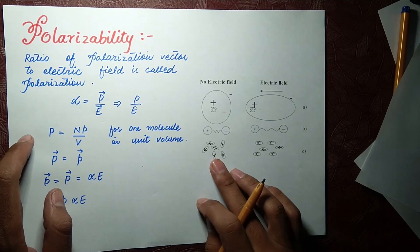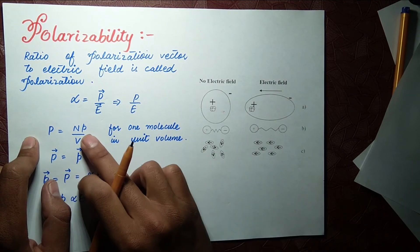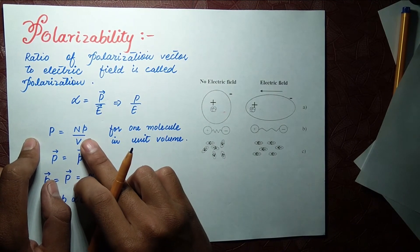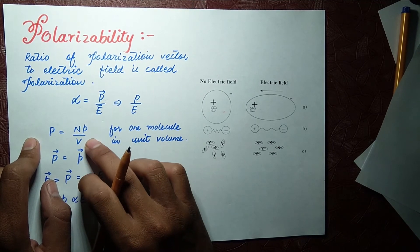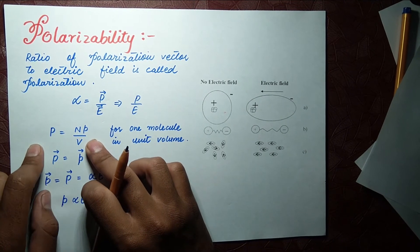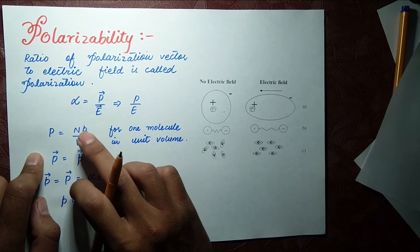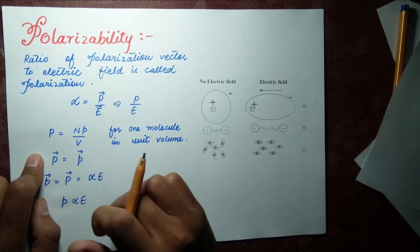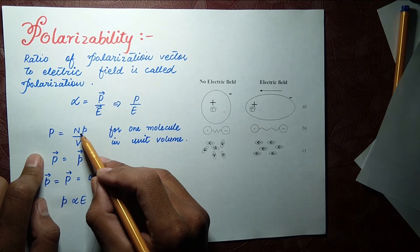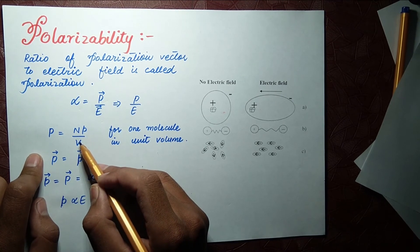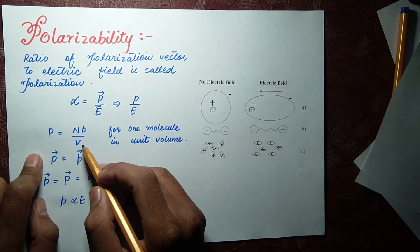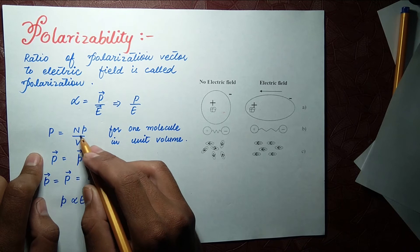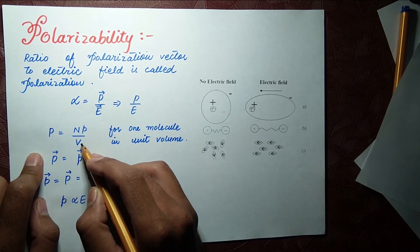P is equal to n times small p over v, for n number of molecules. For a single molecule in a unit volume, n will equal one and v will equal one, because we are talking about unit volume — in unit volume, v equals one.